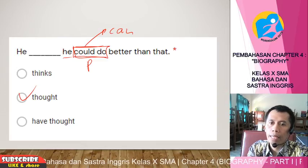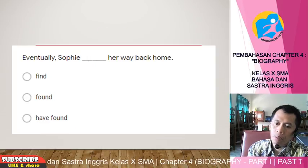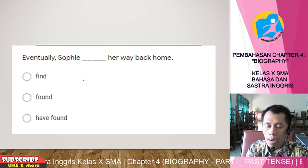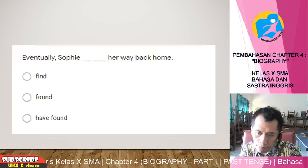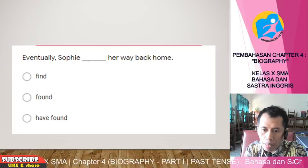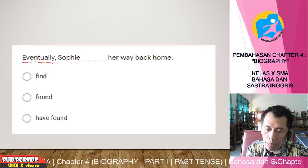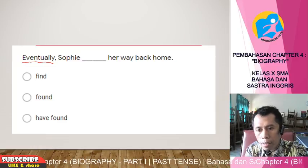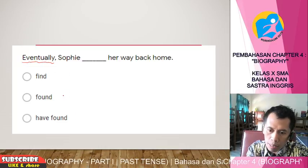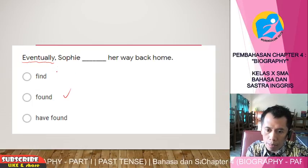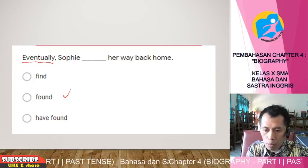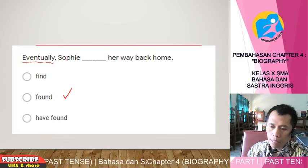'Eventually, Sophie blah blah blah her way back home.' No time adverb, but 'eventually' — 'akhirnya' — helps us understand this is a narrative event that happened in the past. So use verb 2: 'found.' 'Find' becomes 'found.' All three forms mean 'to find,' but in English, use verb 2 when it happened in the past — that is the key difference from Indonesian.